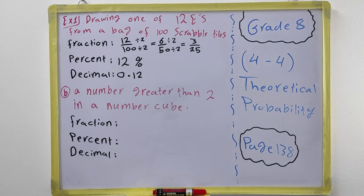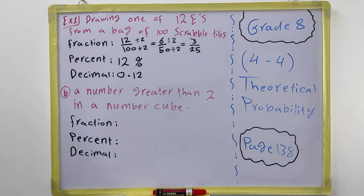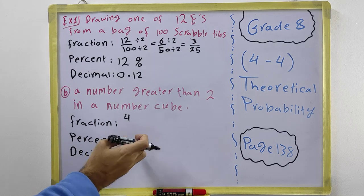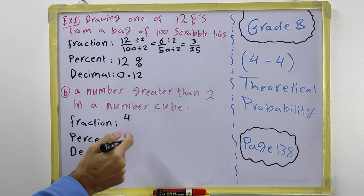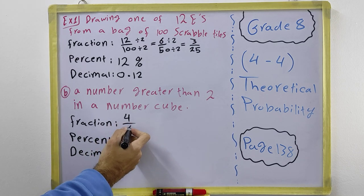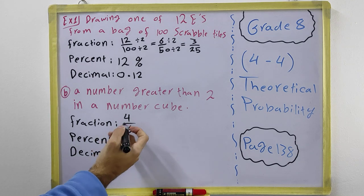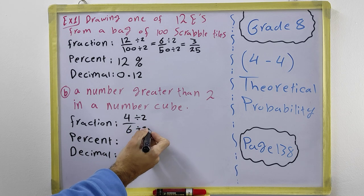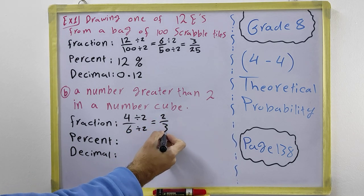For part b: what's the probability of getting a number greater than two on a number cube? The numbers greater than two are 3, 4, 5, and 6 — that's 4 numbers. So it's 4 over 6 total numbers. We simplify by dividing by 2, which equals 2 over 3.